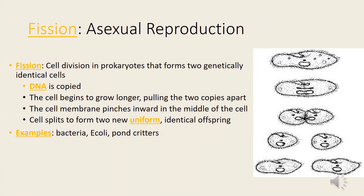Fission is an example of asexual reproduction. It is cell division in prokaryotes that forms two genetically identical cells. DNA is copied, the cell begins to grow longer, pulling the two copies apart. The cell membrane pinches in at the middle of the cell, and the cell splits to form two new identical offspring.